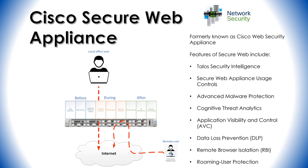The next feature is remote browser isolation (RBI). With RBI, you can isolate web traffic from user devices in situations where a user is accessing a risky website. The Secure Web Appliance isolates the web content in a remote browser in the cloud, separate from the endpoint and the corporate network.